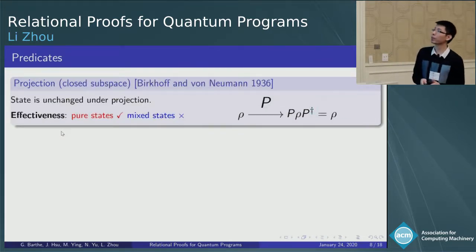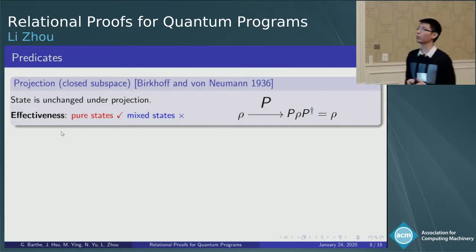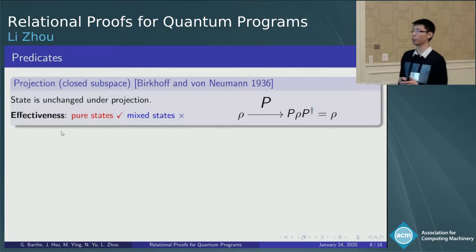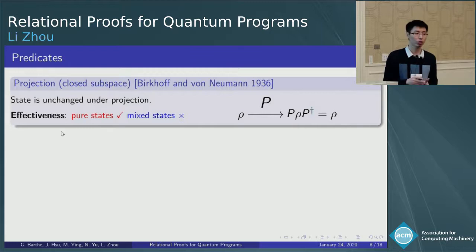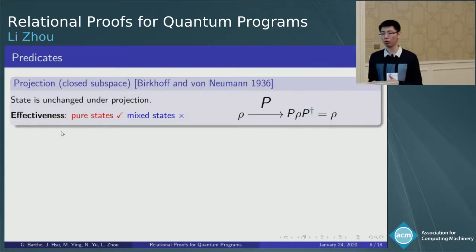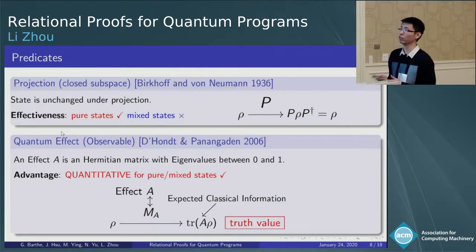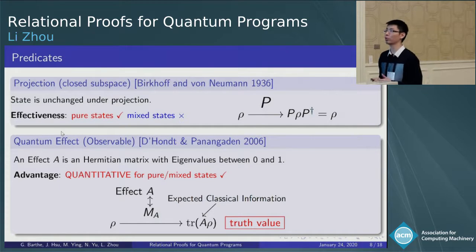Next is about predicates. Proposed by Birkhoff and von Neumann in 1936, projection or closed subspace is an important kind of predicates in quantum logic. Projections are useful and simple when reasoning about the pure state, but for mixed states, it's not so impressive. So, there's another choice of predicates, the quantum effect or observable, which was proposed by D'Hondt and Panangaden in 2006.